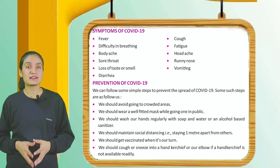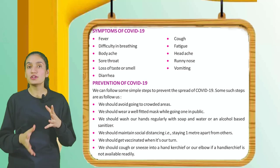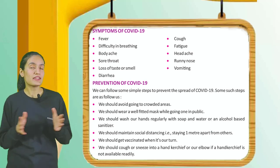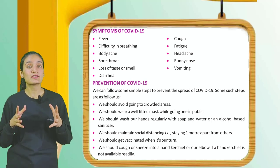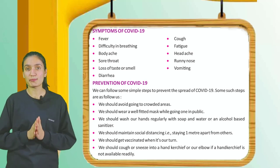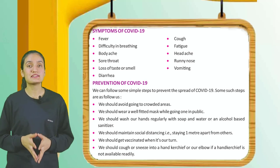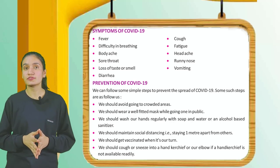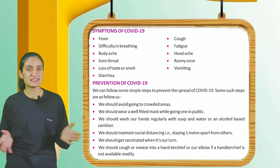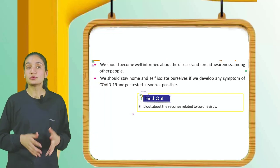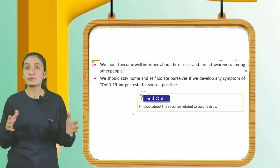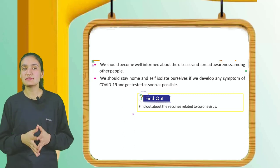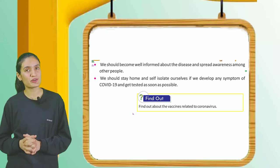Prevention of COVID-19: Avoid going to crowded areas. Wear a well-fitted mask in public. Wash hands regularly with soap and water or an alcohol-based sanitizer. Maintain social distancing — staying one meter apart from others. Get vaccinated when it is your turn. Cough or sneeze into a handkerchief or your elbow. Stay informed about the disease and spread awareness. Stay home and self-isolate if you develop any symptom of COVID-19, and get tested as soon as possible.